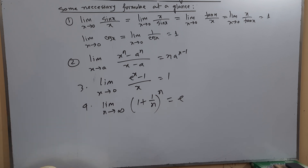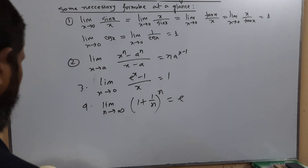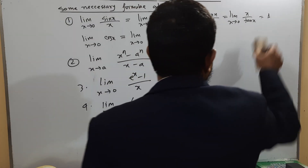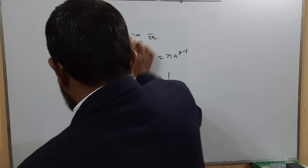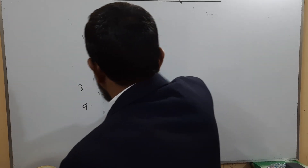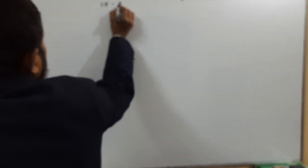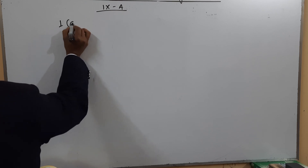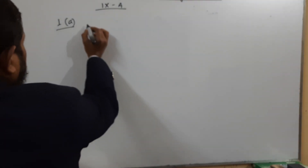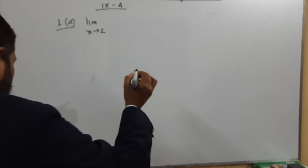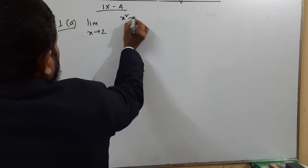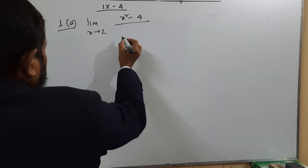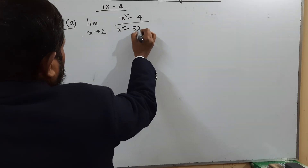With the help of these formulas, I will solve some math. Dear learners, you will memorize these formulas. Now, Exercise 9a. First, I am solving problem 1a: limit x tends to 2 of (x² − 4) / (x² − 5x + 6).